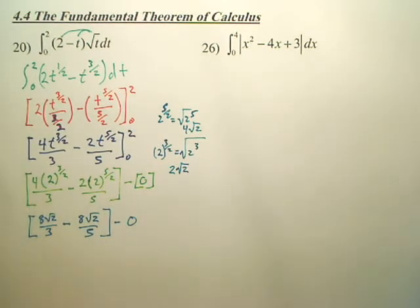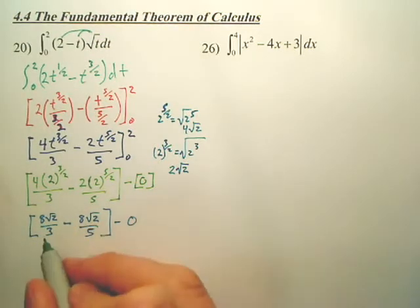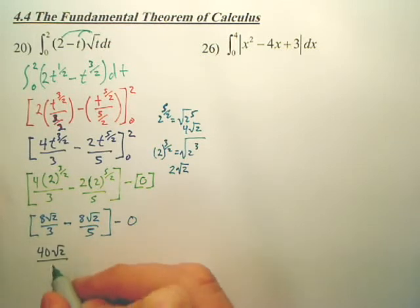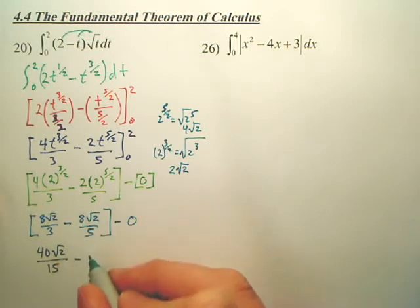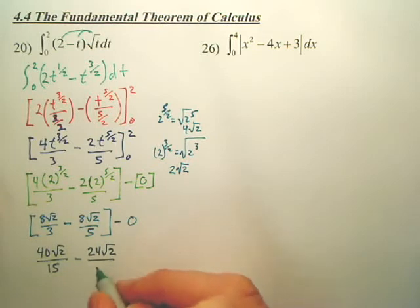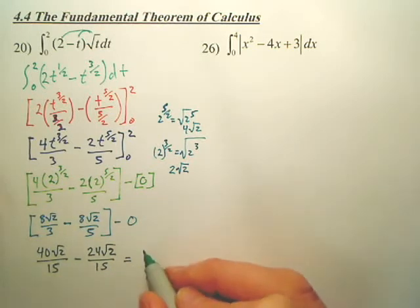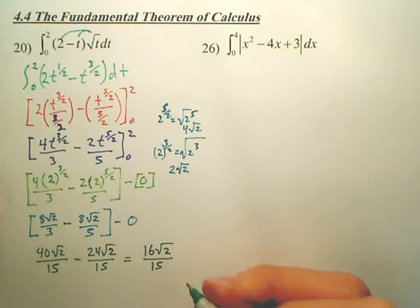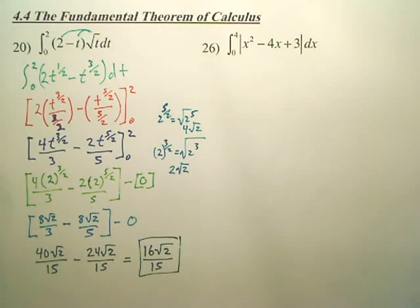Minus zero. And on this particular problem, you do need a common denominator, because you're actually getting a number. So you're going to have to multiply this one by five over five, forty square root two over fifteen. This one by three over three, which becomes twenty-eight. So your answer ends up being sixteen square root two over fifteen. That would be the area under the curve.